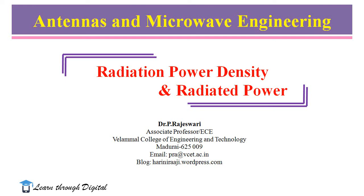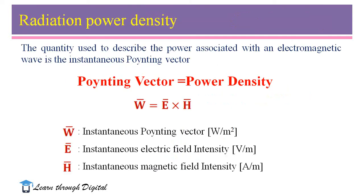Normally we know how to calculate the power flow in circuits. In circuit theory, power is calculated by the product of voltage and current. But how we calculate the power flow in electromagnetic fields — it is with the help of the Poynting vector. As we know, electromagnetic waves are used to transport information through various media or a guiding structure from one point to another. Hence, it is natural to assume that power and energy are associated with electromagnetic fields. The quantity used to describe the power associated with electromagnetic waves is the instantaneous Poynting vector.